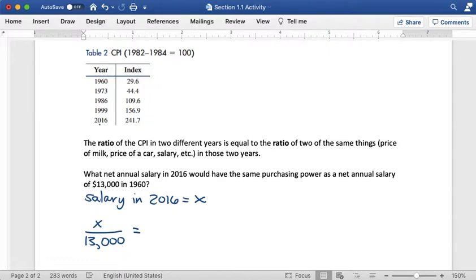So in 2016, the index was 241.7. So 241.7. And then in 1960, the index value was 29.6.